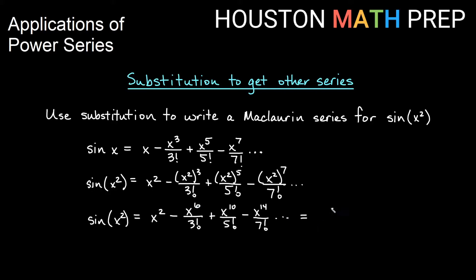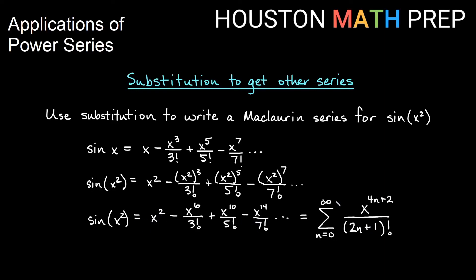If we wanted to write this in sigma notation, we look at the powers of x and the factorials separately. Starting at n=0: the factorials go 1, 3, 5, 7 — those are odd numbers — so the factorial pattern is 2n+1. The powers of x start at 2 and go up by 4 each time, so the power is 4n+2. It is also an alternating series, so we include negative 1 to the n in the numerator as well.